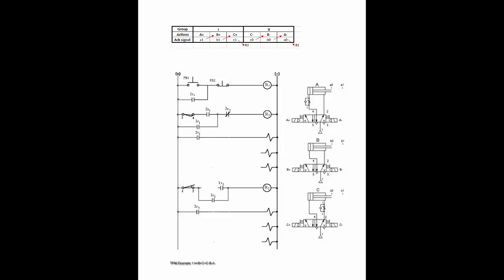To complete the electrical ladder diagram, first copy the given actions from the table: A plus, B plus, C plus — under the control of R1. C minus, B minus, A minus — under the control of R2.